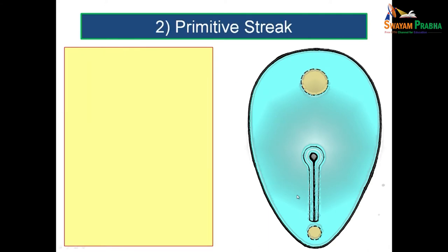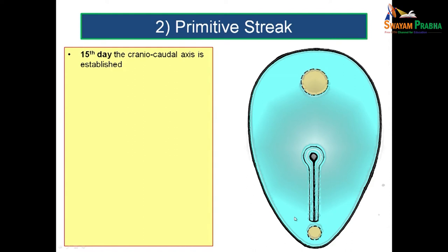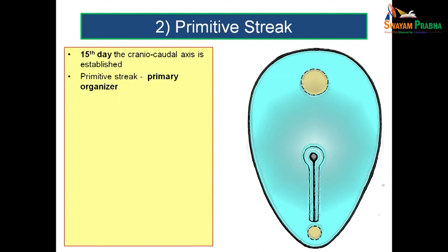By the 15th day, the craniocaudal axis is established. Till the end of second week, we just have a circular disc and cannot say which end will form the head or the tail of the embryo. But during the third week, by the formation of the primitive streak, a cephalocaudal axis is established. The primitive streak is considered as the primary organizer.